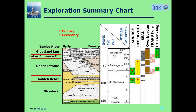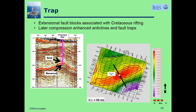This is an exploration summary chart. Here's the stratigraphy, the formation names, the geological ages from 0 to 150 million years — Jurassic, Cretaceous, Paleocene, Neogene — and then the source, the primary source, the primary reservoir, the seal, the overburden, the trap formation, and when hydrocarbon migration occurred. I won't go into further detail since we've already looked at this and talked about it.